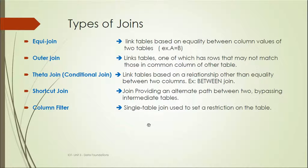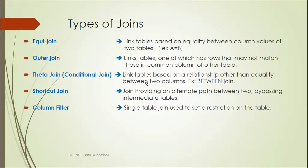The different types of joins are: equi join, outer join, theta join, shortcut join, and column filter. An equi join links tables based on equality between column values of two tables — if column A and column B in the other table are equal, that data will be retrieved. An outer join links tables where one table has rows that may not match those in the common column of the other table.